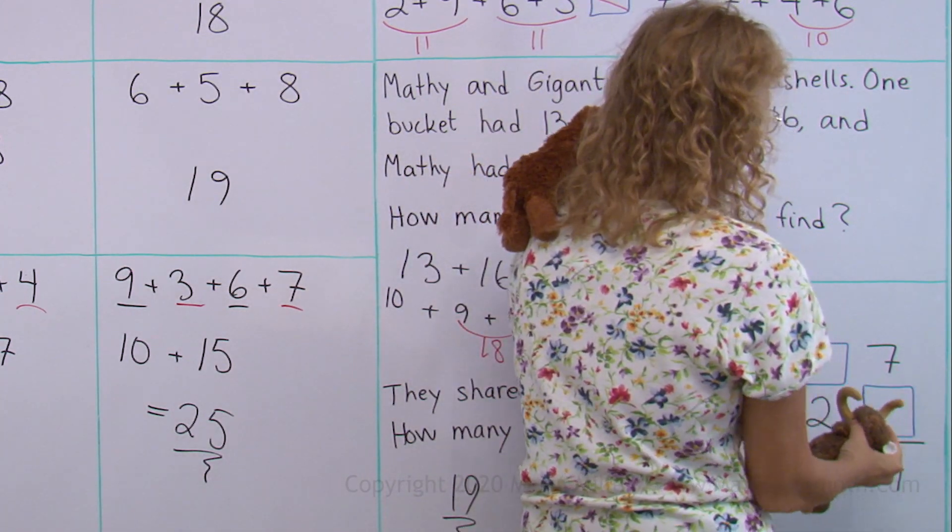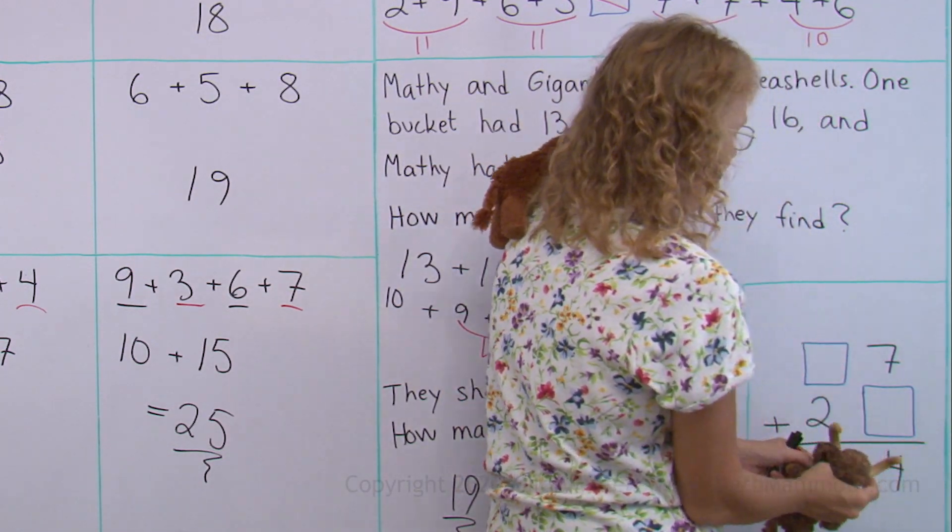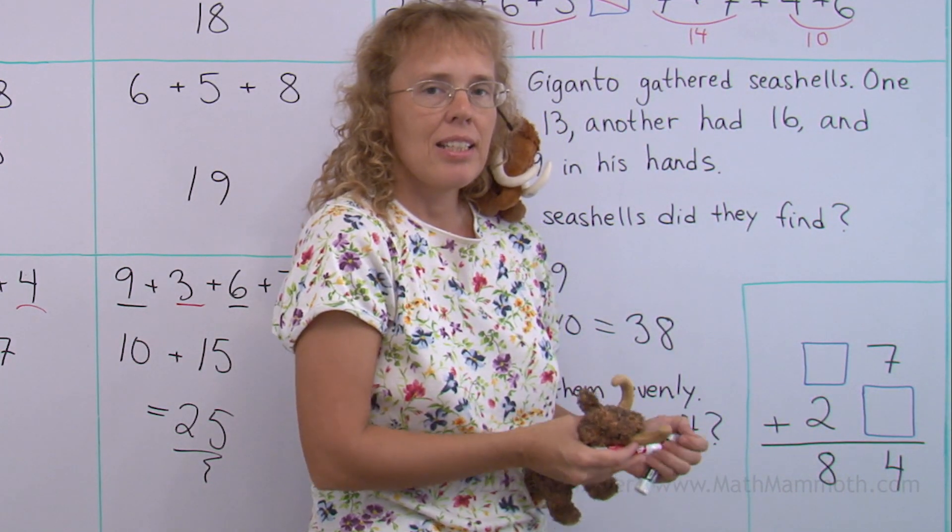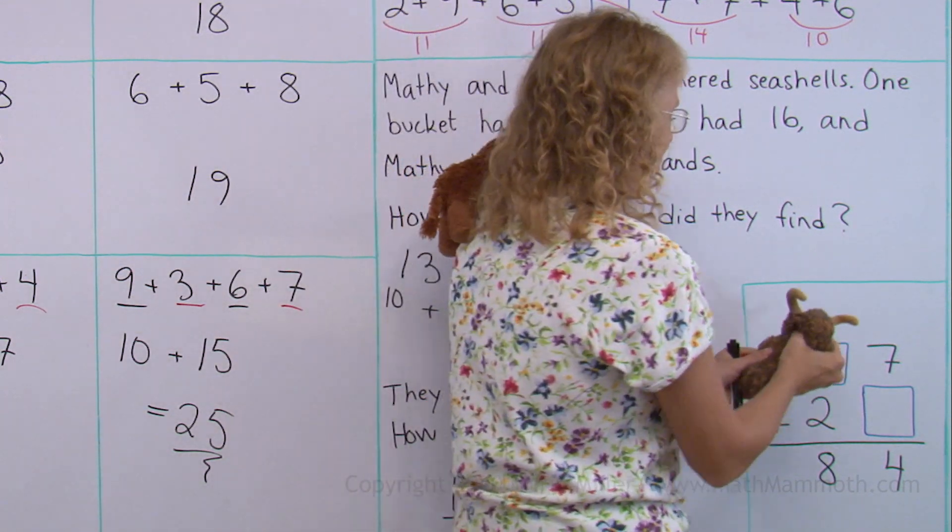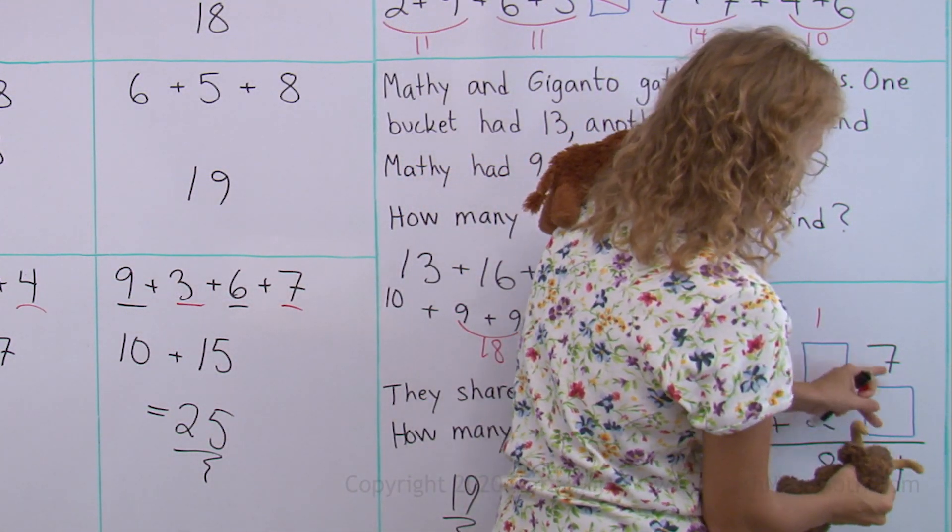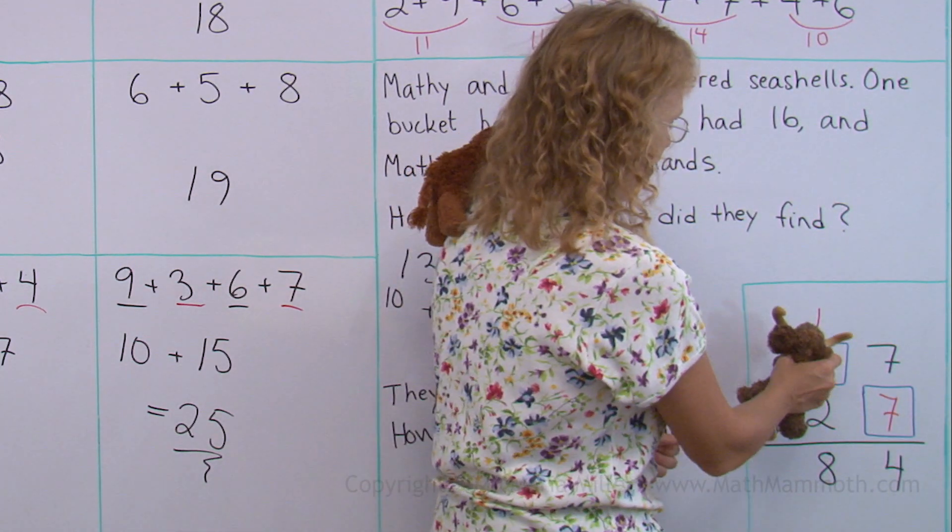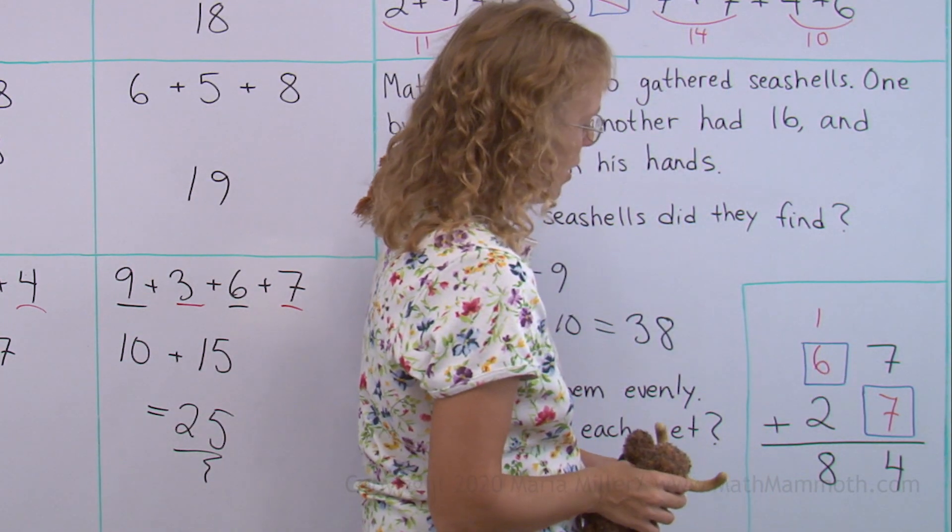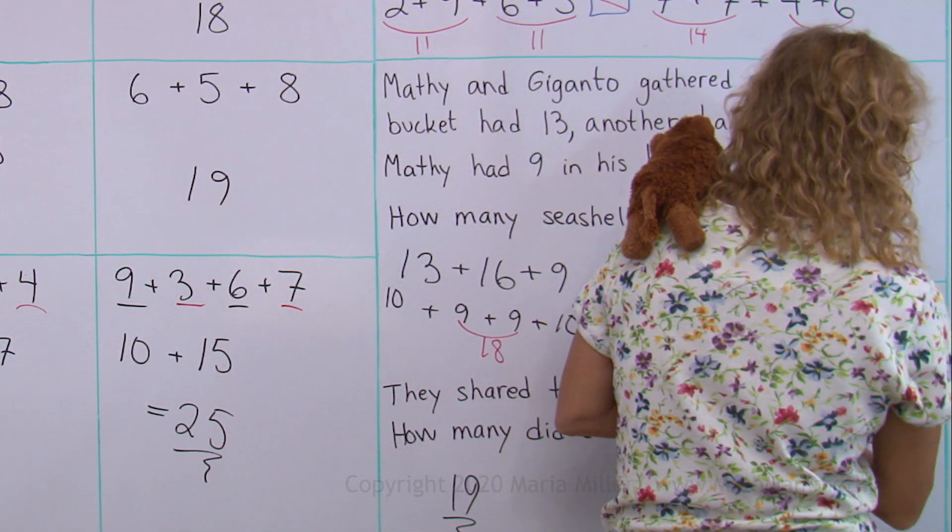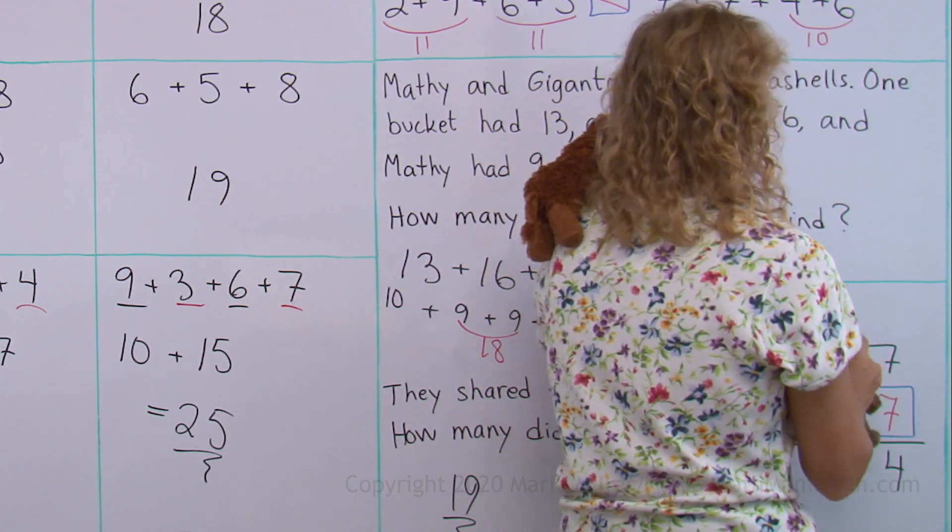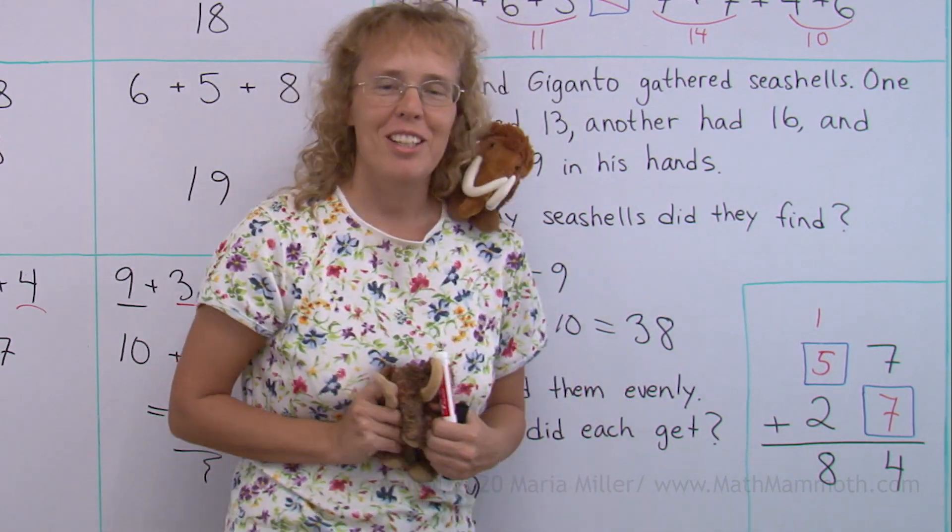Yeah. 7 plus 3? No, no, no. Not 3. No, you're not subtracting. 7 plus something makes 4. But since there isn't any number like that, we need to think of the regrouping, that it's actually 14. 7 plus 7, yes, makes 14. And then... Well... No, no, no. Giganto, no. It's not that way. Try again. Aha. There you go. Good boy. We're all done with this lesson. See you next time.